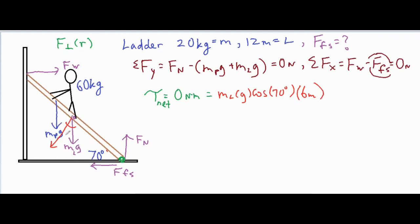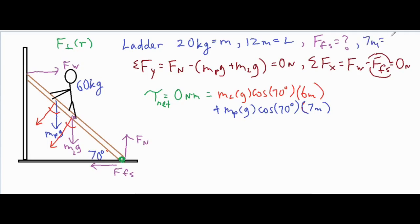For the person's weight, it's a similar idea. We take mp × g and multiply by cos(70°) to find the component perpendicular to the ladder — cosine because it's the adjacent side to the angle, with the ladder itself as the hypotenuse of the triangle. The person is seven meters from the pivot point. That seven meters is a distance from the original problem representing how far up the ladder the person has climbed.